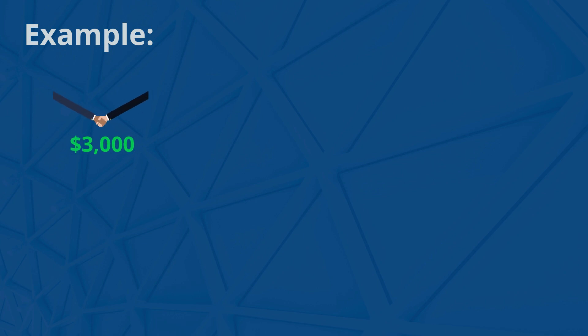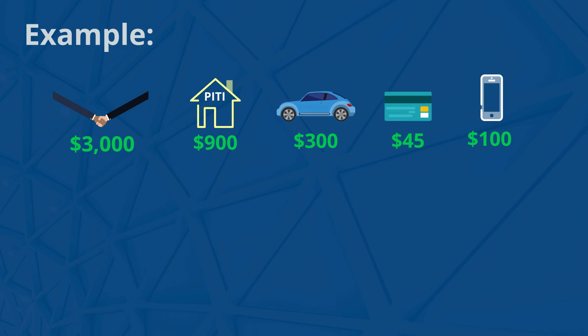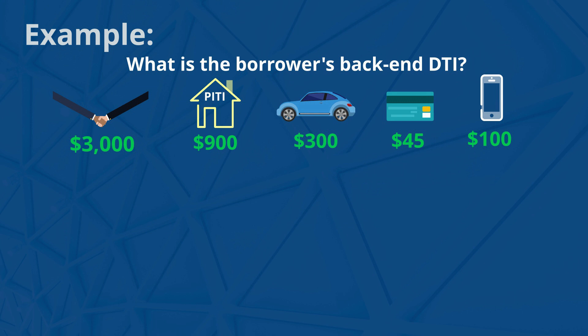Let's do an example. A borrower's monthly qualifying income is $3,000. The current proposed loan PITI is $900. They have a car payment of $300, a credit card payment of $45, and a cell phone bill of $100. What is the borrower's back-end DTI? Remember, their back-end DTI will include the car payment, the mortgage payment, and credit card payment, but will not include the cell phone bill.